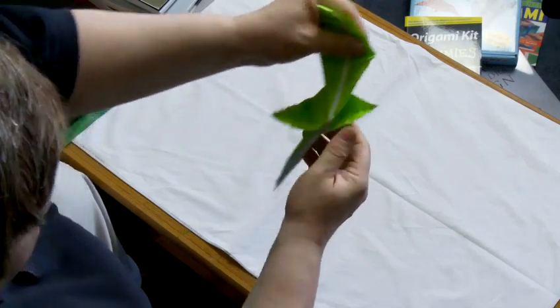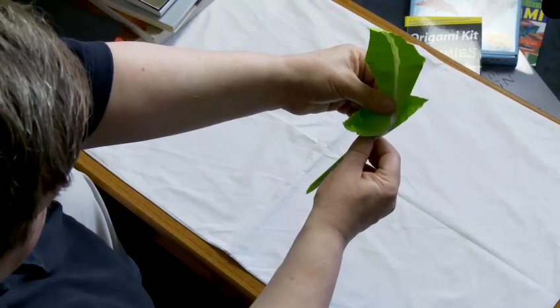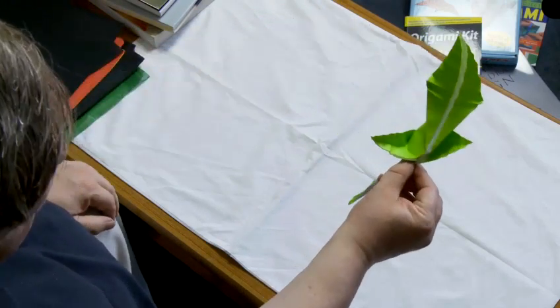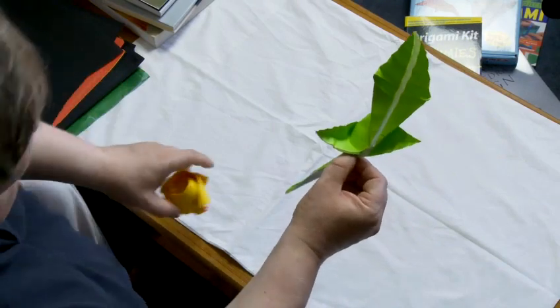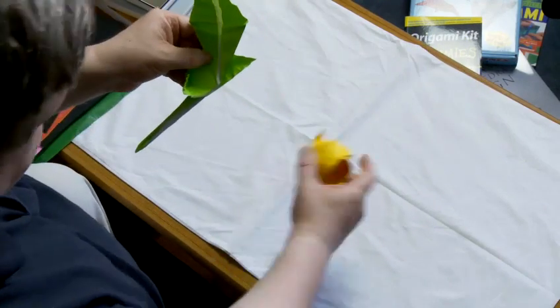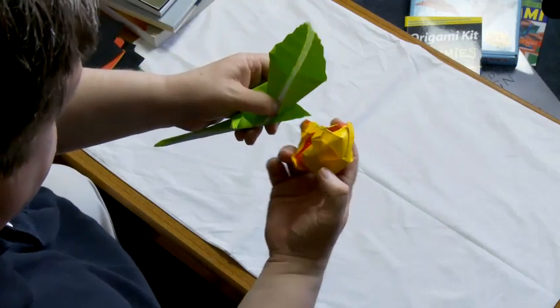And that is the stem. And what I'm going to do is join this onto a flower. Make it much more interesting. Here's a rose I made earlier. Yellow rose of Texas.